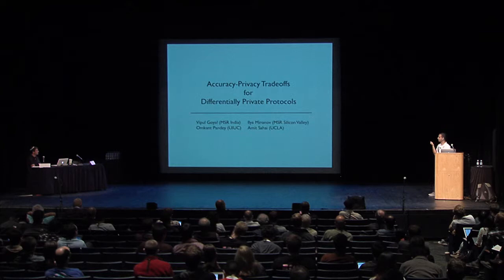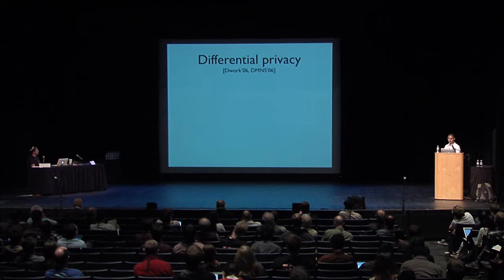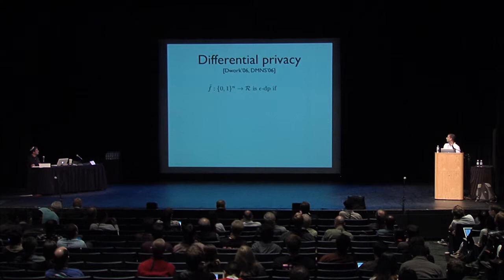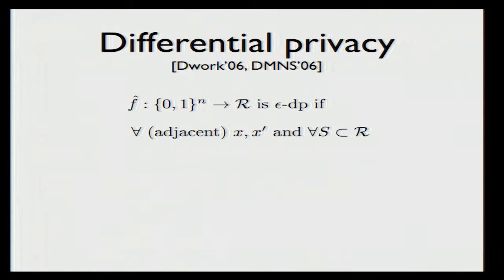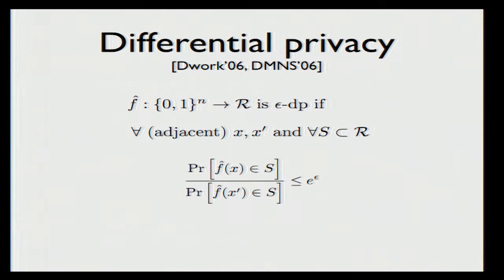Let me quickly recall the definition of differential privacy. It was formulated by Dwork and her co-authors in 2006. The definition says that a mechanism f-hat is epsilon-differentially private if for every two adjacent inputs x and x prime, and for every subset of outputs s, the following two probabilities are within a multiplicative factor of e to the power epsilon. The first probability is the probability of hitting set s when the input to f-hat is x, and the other is the same probability when the input is changed to x prime. By adjacent, I mean the two vectors are within a Hamming distance of one from each other.